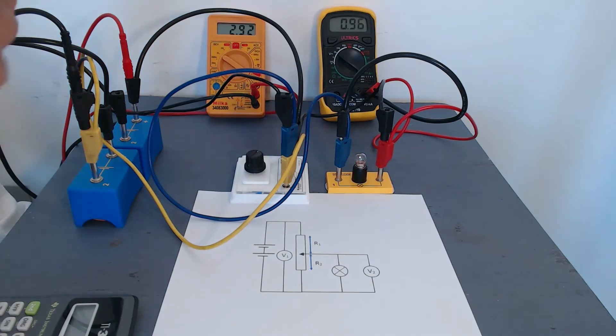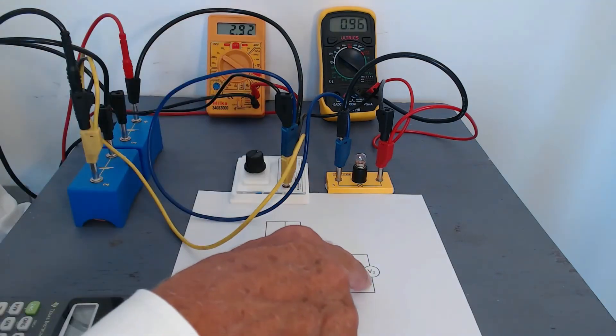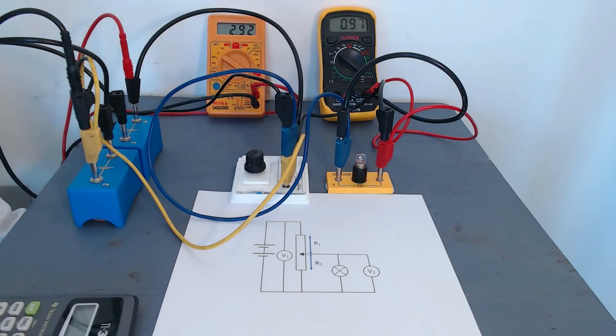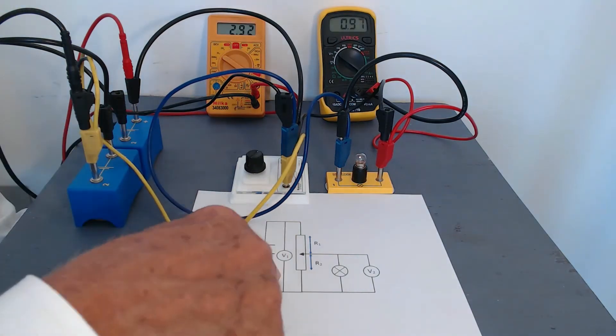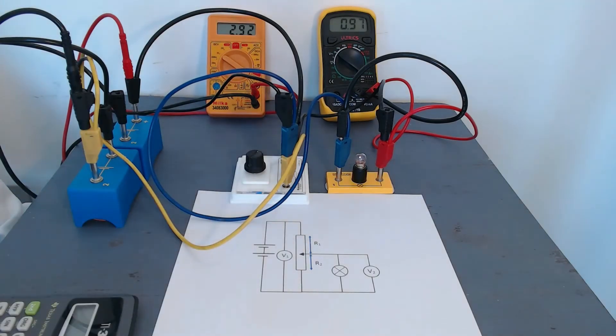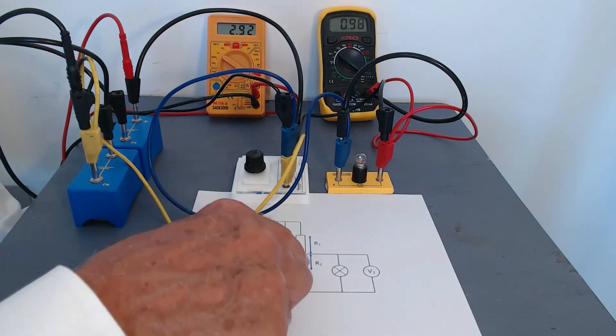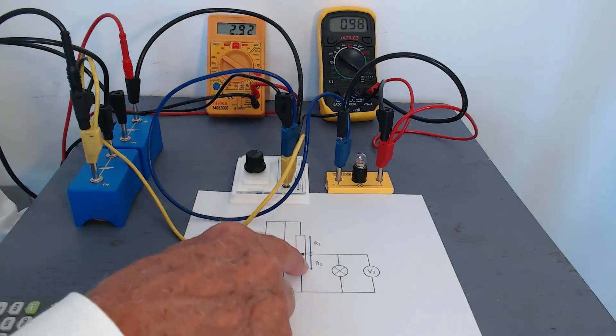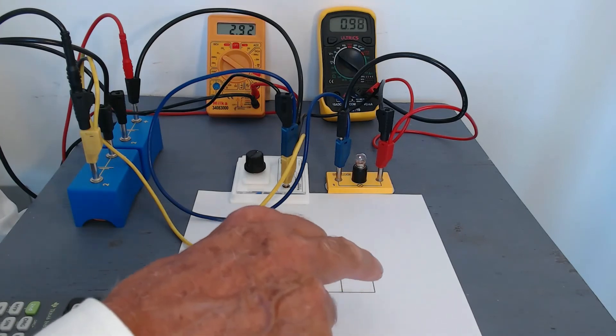But now that voltage across the bulb V2 is approximately one third of the total V1. And how do we get it from our circuit diagram? Well, this proportion R2 of the total R1 plus R2 is about, as I said, a third of V1. So the voltage here is R2 over R1 plus R2 multiplied by V1.